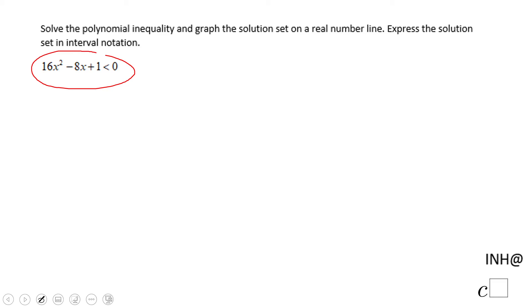If you notice, the first thing, let me set this equal to zero first. And if you notice, this is a perfect square. 16x² is nothing else than 4x squared, 1 is another perfect square.